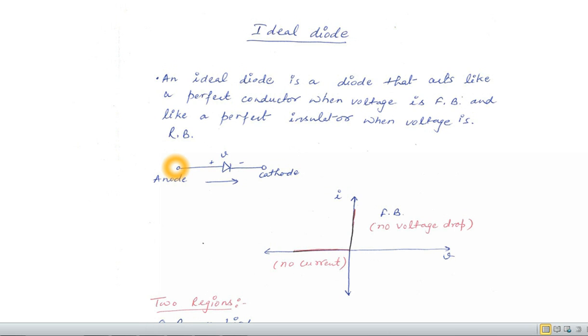This terminal is anode and this terminal is cathode. This is the VI characteristic of ideal diode.